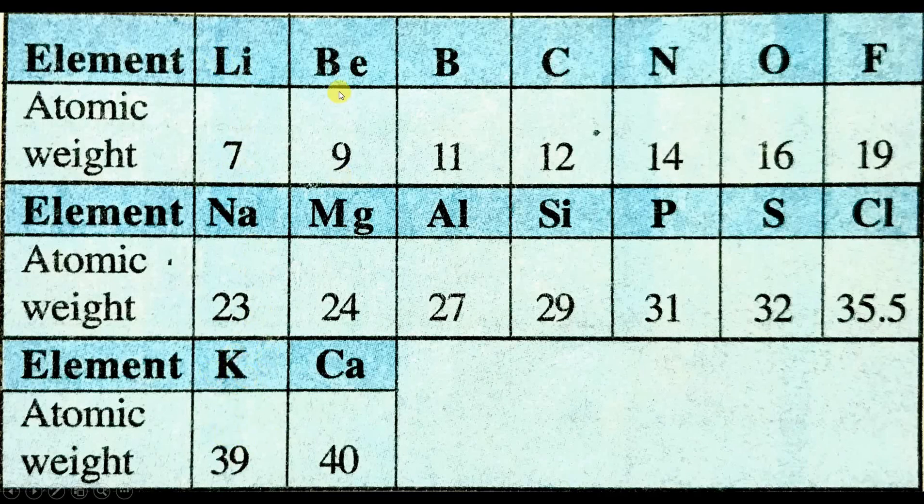Similarly, beryllium, magnesium and calcium, they all have similar properties. So all the elements in the vertical columns are going to have similar properties. All the elements which are in the vertical columns are going to have similar properties.